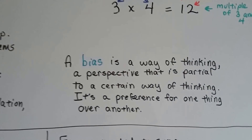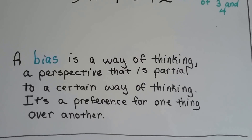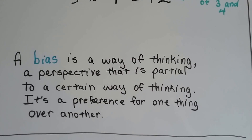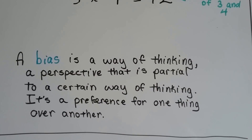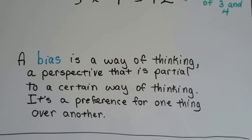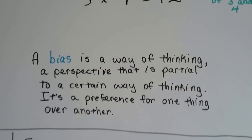A bias is a way of thinking — a perspective that is partial to a certain way of thinking. It's a preference for one thing over another. So we have to be careful of bias when we're doing surveys.